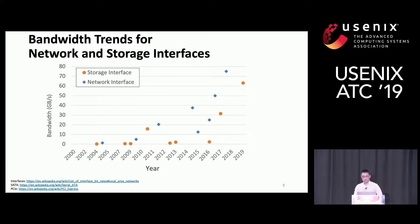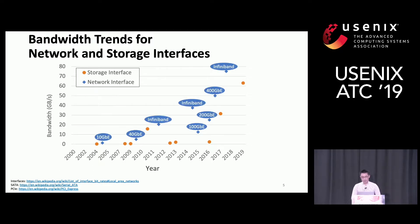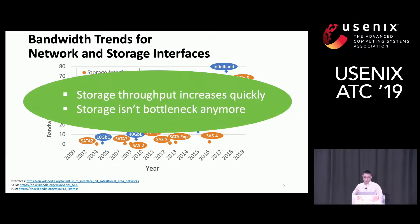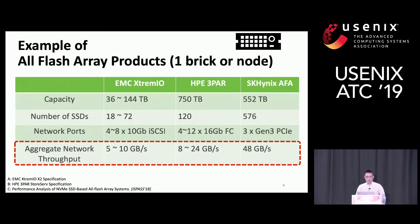Let me show you the bandwidth trend for network and storage interfaces. The x-axis shows years and y-axis is bandwidth. As you can see, network interface bandwidth increases fast, and storage interface bandwidth grows even faster. So we can say storage throughput increases quickly, and storage is no longer the bottleneck in our system.